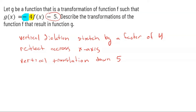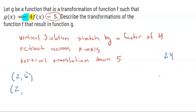To walk through a quick example: if the point two comma six is on f, all transformations here are vertical, so the x-coordinate of two stays the same. The output of six gets multiplied by four to become 24. Then it gets reflected across the x-axis, so it becomes negative 24. Then it shifts down five, making it negative 29. So the new point is two comma negative 29.